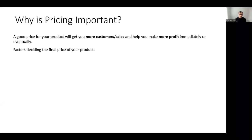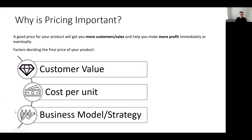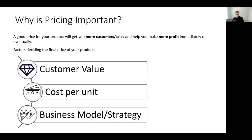So what are the factors that are deciding the final price of a product? Number one is customer value. If you're able to articulate that the customer is going to get value out of your product, there is nothing else that can convince the customer to buy regardless of the price. Second is cost per unit — how much it costs you to produce that product or provide that service. And number three is business model and strategy, which will also be a main factor influencing the final price.